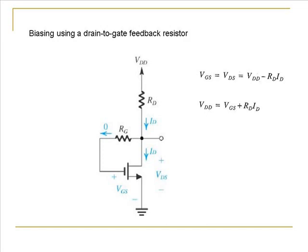Now we can see that if due to some parameter variations the drain current increases because VDD is a constant we will have a decrease in VGS which in turn decreases the drain current. So the resistance RD that is the drain resistance acts like a negative feedback to stabilize the drain current. And hence this biasing scheme is a good scheme.